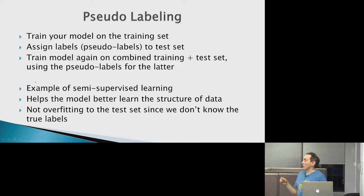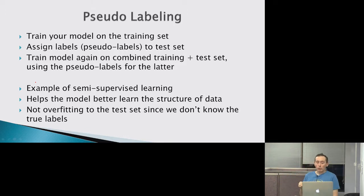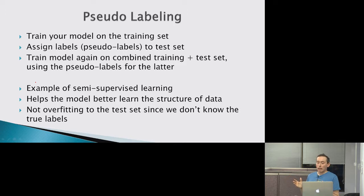A couple more techniques, then I'll get to the actual solutions. Pseudo-labeling is somewhat unusual: you train your model on the training set, run it on the test set and make predictions, then combine the training and test sets using those predicted labels as if they were actual labels. This gives you a bigger set to train on, and there's no overfitting in the usual sense because you don't know the actual test labels — you're just working with pseudo-labels. It's not mathematically obvious why this should work, but apparently it improves accuracy.